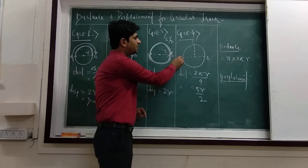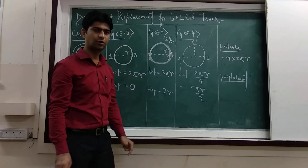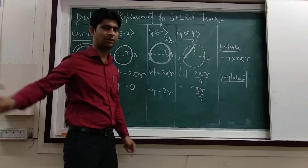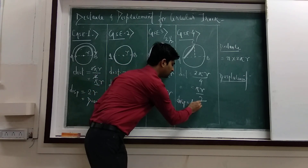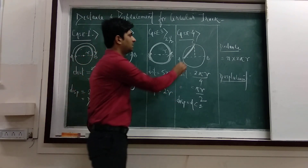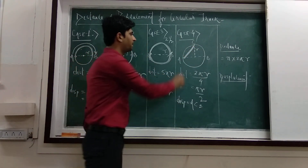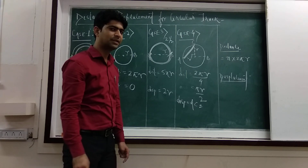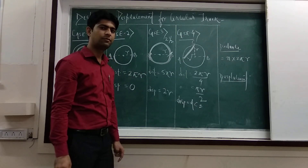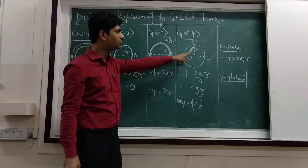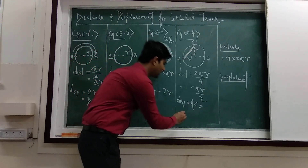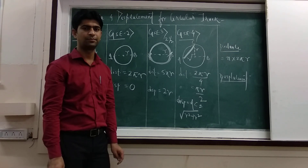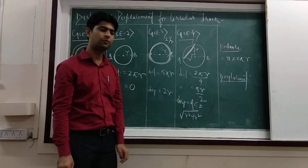Now for displacement in case number 4: to move from point A to point C, the shortest route is the straight line AC. So displacement equals AC. To calculate AC, one side is the radius r and the other side is also the radius r, with a 90-degree angle between them. Applying Pythagoras theorem: the hypotenuse AC equals the square root of r squared plus r squared.